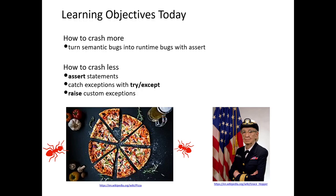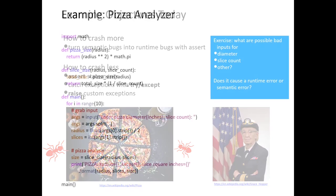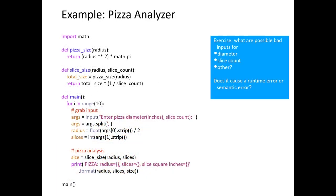If the user puts in some bad data, we want to be able to tell them 'hey, that's bad data, try again.' We're going to learn about exceptions. We've been seeing exceptions every time our code crashed — those traceback messages, the 'code crashed on line 9 with a key error.' There are circumstances where we expect code to crash, and what we want to do is deal with that and move on without letting it completely ruin the program.